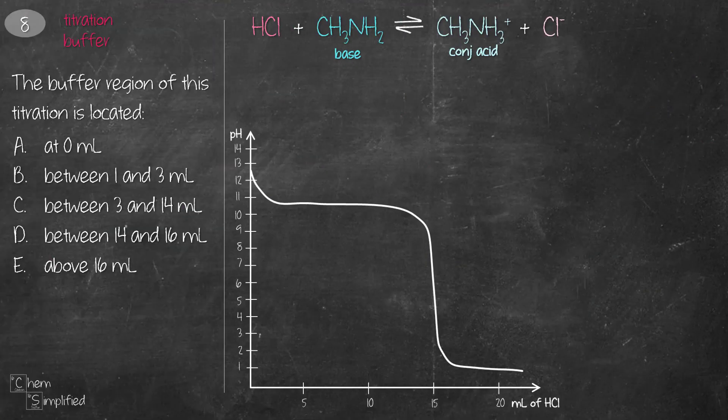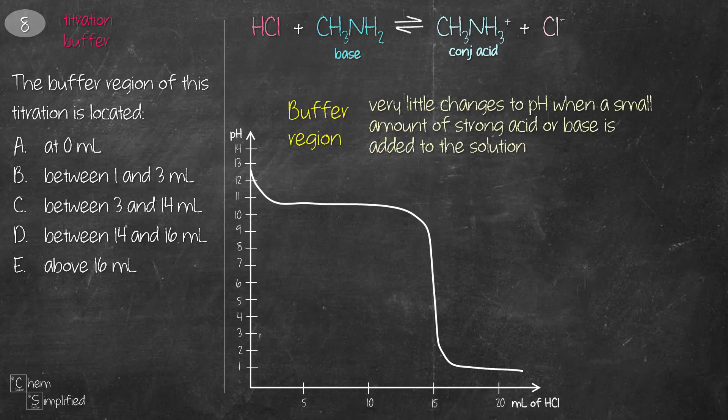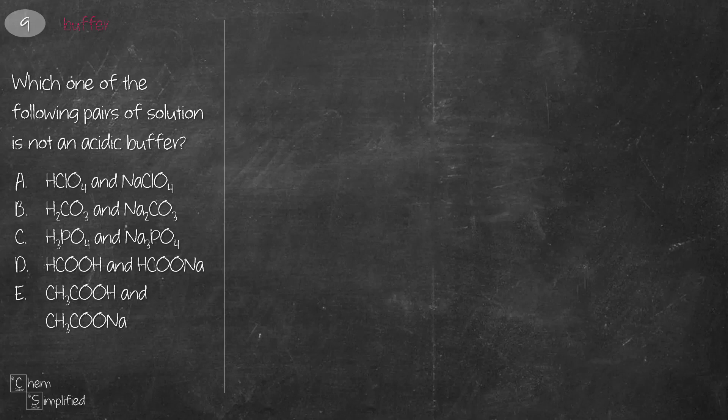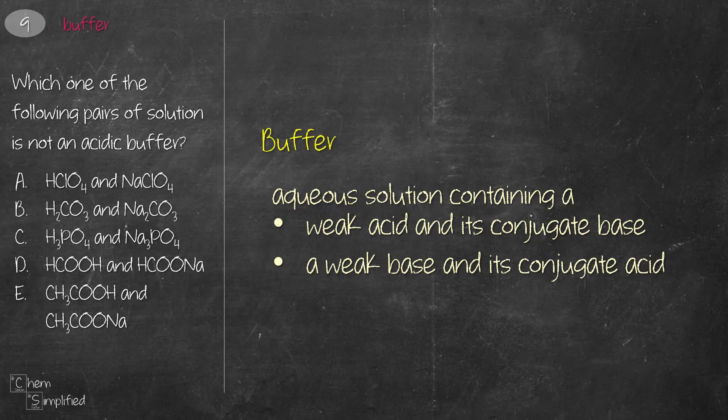Using the same titration curve again, we now need to identify the buffer region. That's the region where there's very little change in the pH of the solution when HCl is added. This region fits that description. And that makes C the correct answer. This question focuses on the understanding of buffer. Buffer is an aqueous solution that contains a weak acid and its conjugate base, or a weak base and its conjugate acid. Since the question is asking an acidic buffer, therefore we're focusing on weak acid and its conjugate base. Now the key word is weak acid. Judging from all the five options, HClO4 is the only strong acid, while the rest are weak acid, and therefore it cannot be used as an acidic buffer.